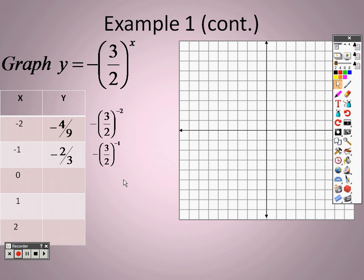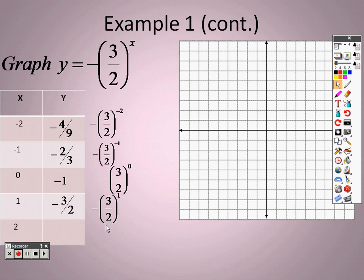When I plug in negative 1, I get negative 0.6666, which is negative 2 thirds. When I plug in 0, I get negative 1. When I plug in positive 1, I get negative 3 halves, which is negative 1.5. And when I plug in 2, I get negative 2.25, or negative 9 over 4.